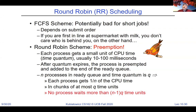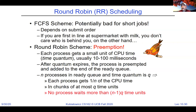With n processes in the system, each process running for a long time gets 1/n of the CPU. In chunks of at most Q time units, no process ever waits more than (n-1)*Q time units. This guarantees a maximum wait time, providing a minimum level of responsiveness. The system where typing whole sentences took seconds to appear was still round robin, but n was so large that the maximum wait became unacceptably long.